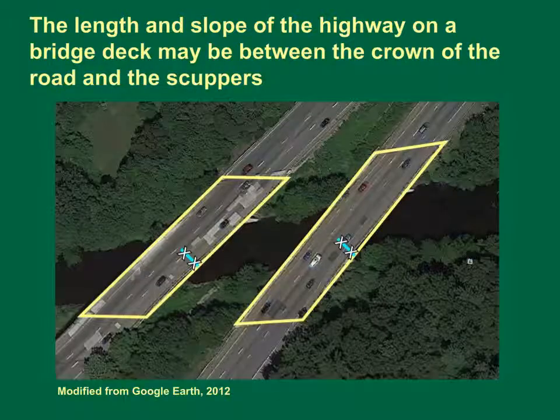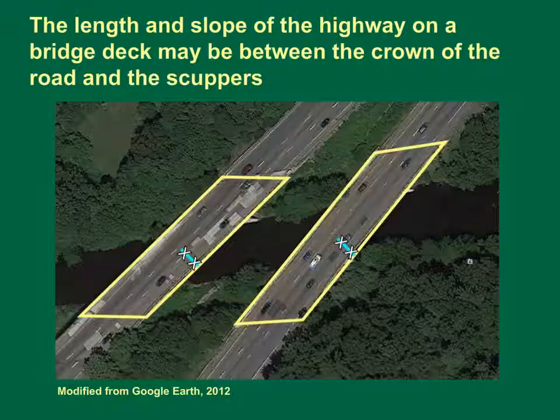This image shows two highway bridge decks as highway sites. The boundary delineating the drainage area on each bridge is shown as a yellow line. For a bridge with scuppers, the main channel length may be the distance from the crown of the road to the bridge deck drain along the curb. The main channel slope would be measured along the transverse slope of the deck at points at 10 and 85% along the flow path, as shown by the x's in the image. If the bridge is drained by scuppers, the vertical drop to the river should not be used to calculate the length or slope of the drainage path.